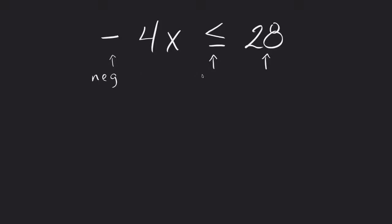So negative, a less than, or equal to, and this is a positive. Now, when I go to divide, I'm going to divide this by negative 4, and I'm going to divide this by negative 4. So what does that do to this answer?